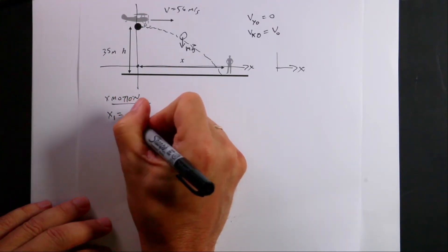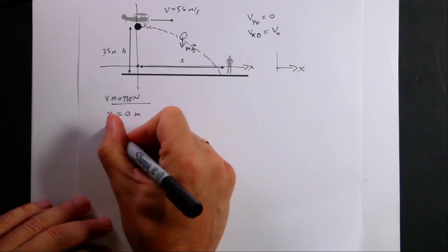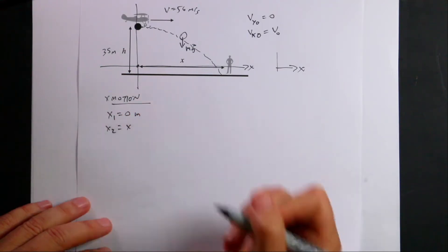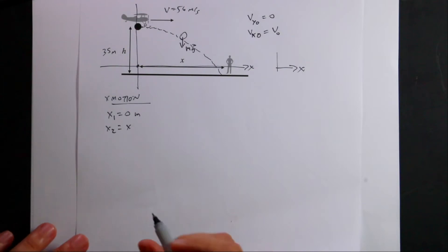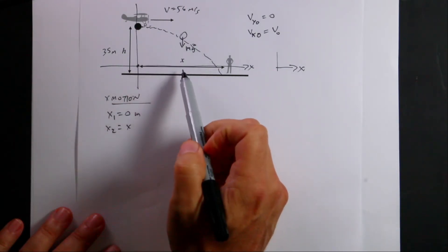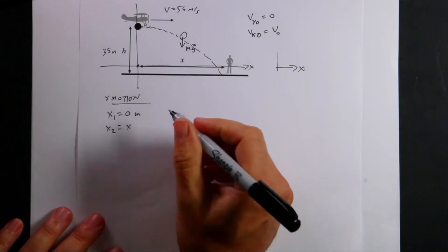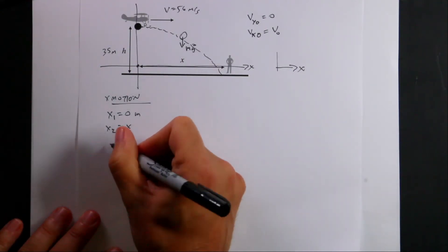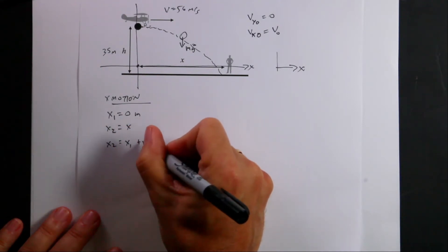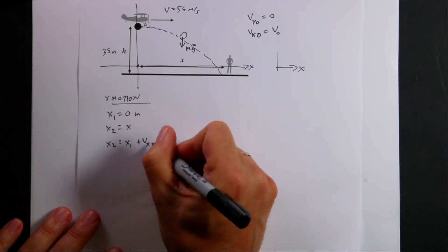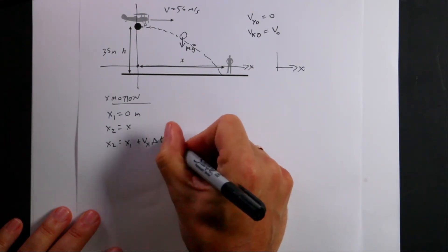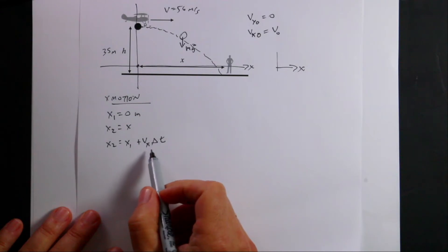I have the following. x, I'm going to call it the initial x. x1 is zero meters. x2 is x meters, which we don't know, right? I'm trying to find that. And since the only force is in the y direction, the acceleration in the x direction is zero. So I can write the following kinematic equation. x2 equals x1 plus vx delta t.